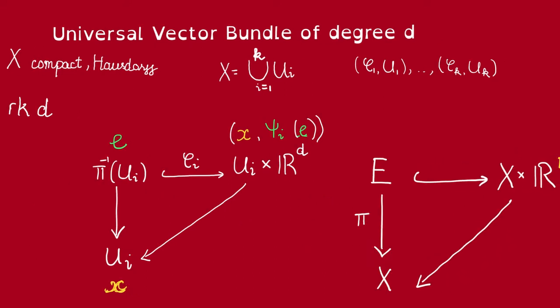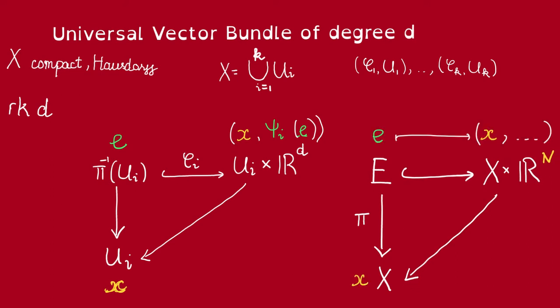But let's see what we want. We want this embedding. That means we want coordinates for every e here. The problem is though that we can't use this psi_i because psi_i is only defined on this open set. We need some map that is going to be defined on the whole of E.